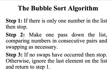Step three, when we get to the end of the algorithm, is really important: if we pass through the list and we don't do any swaps, then we stop and we know the numbers are in order. Let's have a look at how that works in practice.